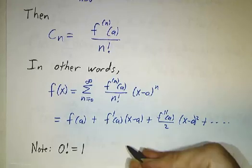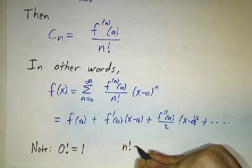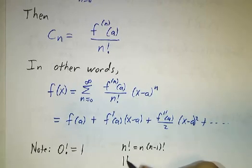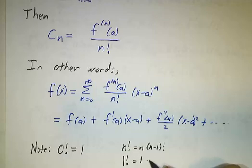Zero factorial is defined to be one. The reason is that for any number, you want n factorial to be n times n minus one factorial. So one factorial should be one times zero factorial. But one factorial is one, so that means that zero factorial has to be one.